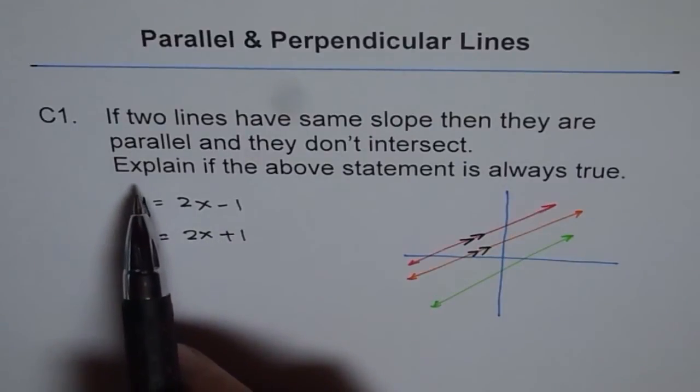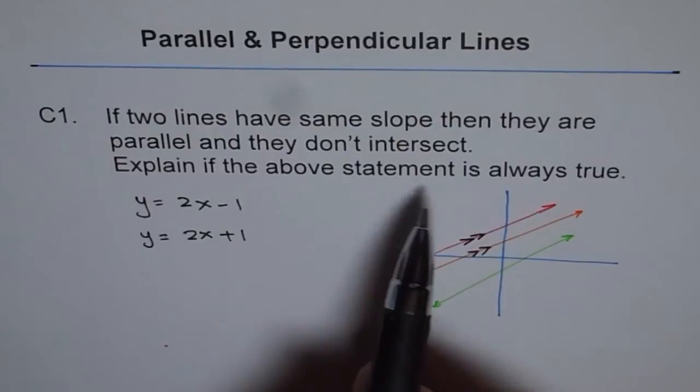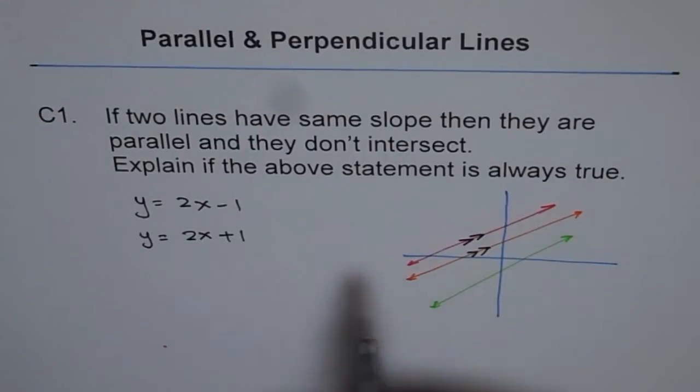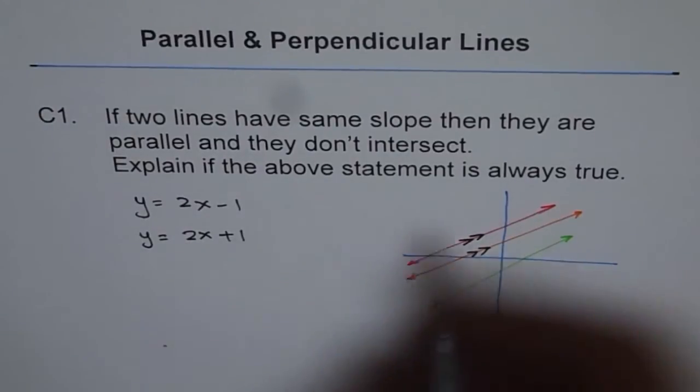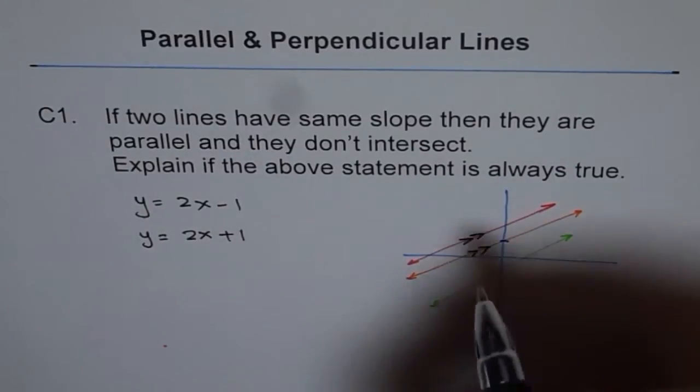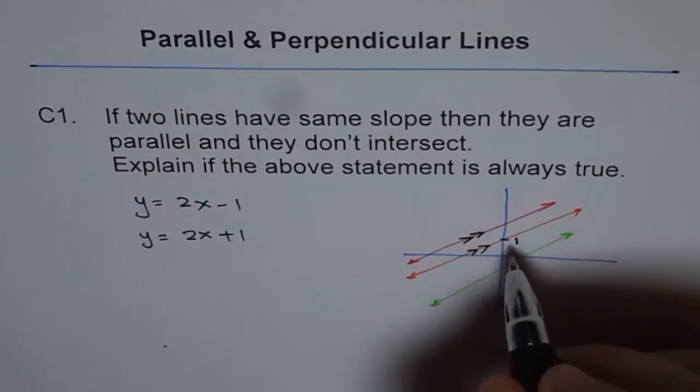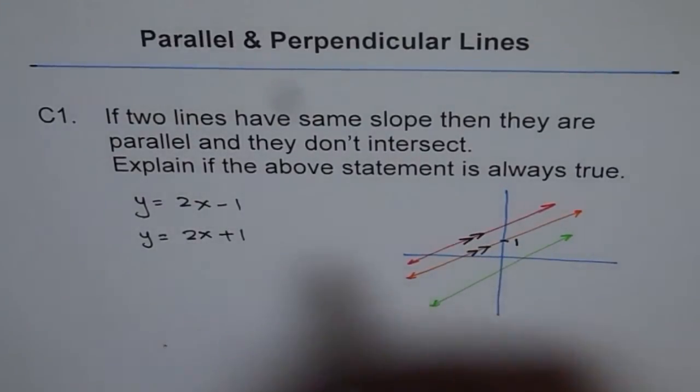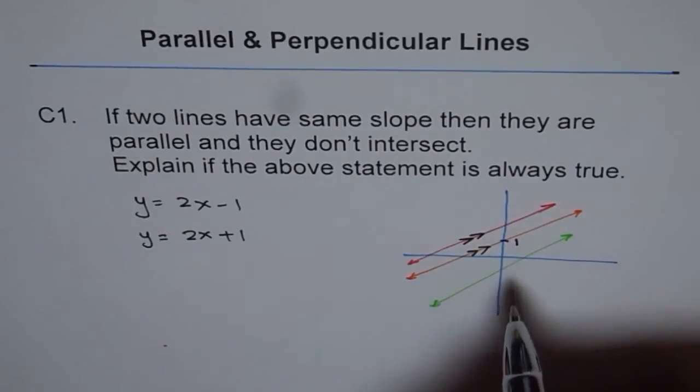Now the second part of this question is, explain if the above statement is always true. So I am coming to the second part. Now here it is. Let us say this is my line y equals 2x plus 1. So I am saying, well this point is 1 for me. If this point is 1 for me, then that is the y-intercept 1 and slope 2 means rise of 2 for run of 1.